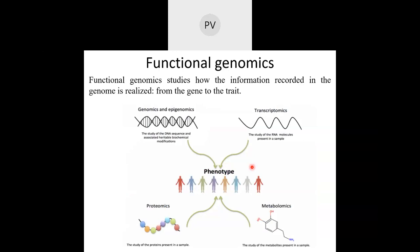Functional genomics basically studies the phenotype — how the information encoded in the genome is realized, from gene to trait — and of course it is completely based on the interaction of the cell or tissue with the environment. We will talk today about transcriptomics, proteomics, and metabolomics as parts of functional genomics. Functional genomics includes the transcriptome — the entire range of transcripts produced by a given organism — the proteome — the entire array of encoded proteins — and also metabolomics.